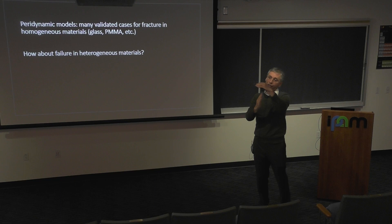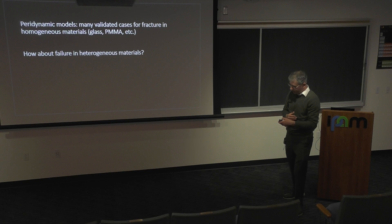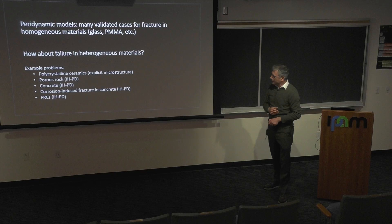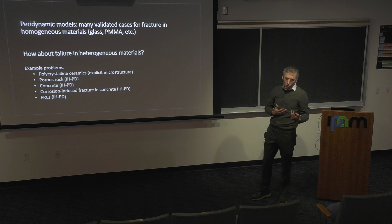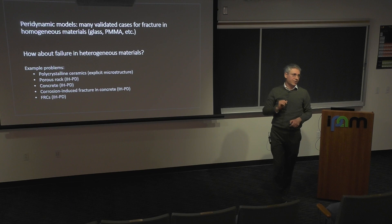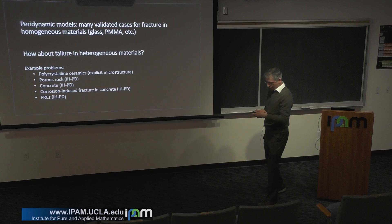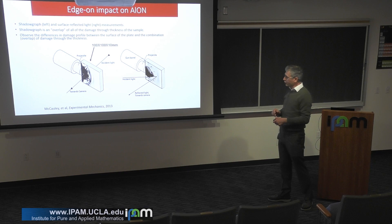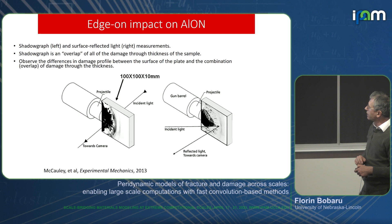For heterogeneous materials, we can do explicit microstructure modeling — the easy but expensive approach — or try some homogenization models that work for fracture. Here's a case modeling the exact microstructure: impact on ALON (aluminum oxynitride), a transparent ceramic. They apply an edge impact on a ~10 cm × 10 cm sample a couple centimeters thick. In ALON, fracture is a combination of transgranular and intergranular — grain boundaries are nice and flat, but concoidal fracture surfaces also occur through the crystals.